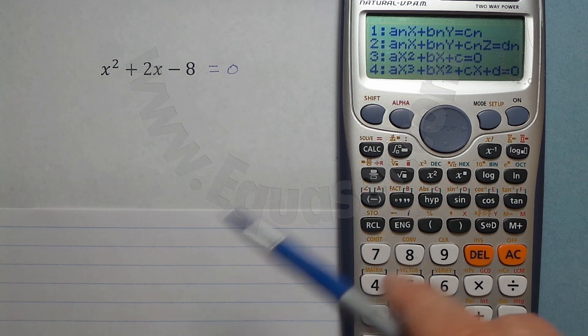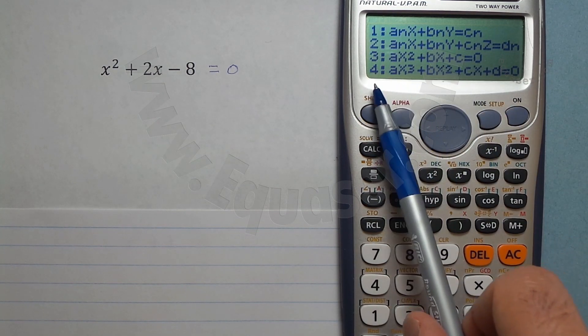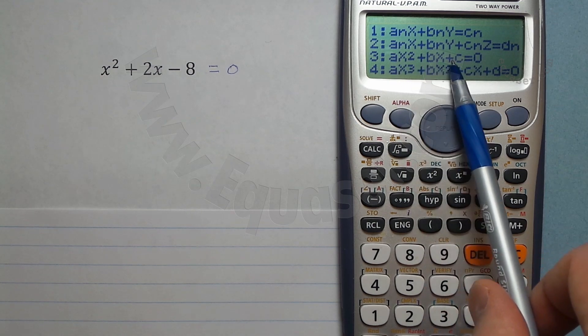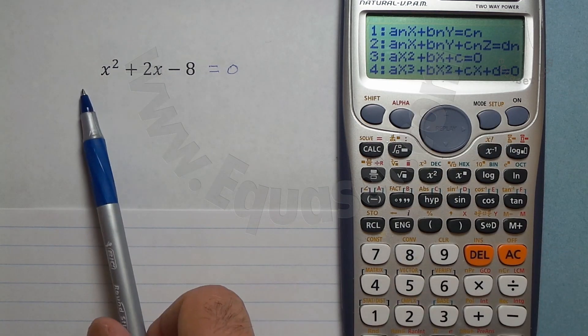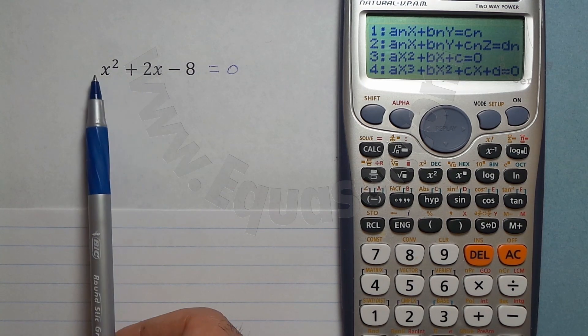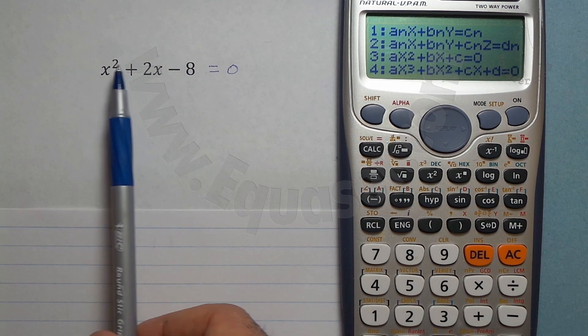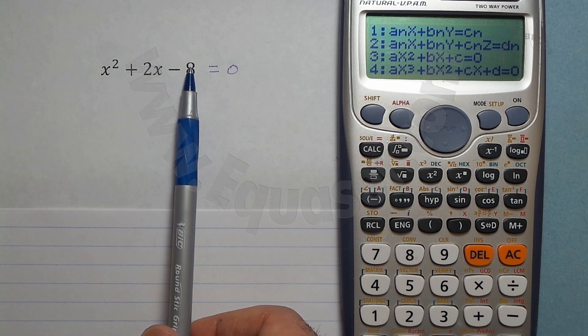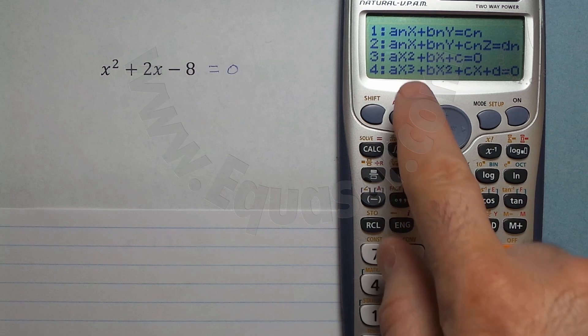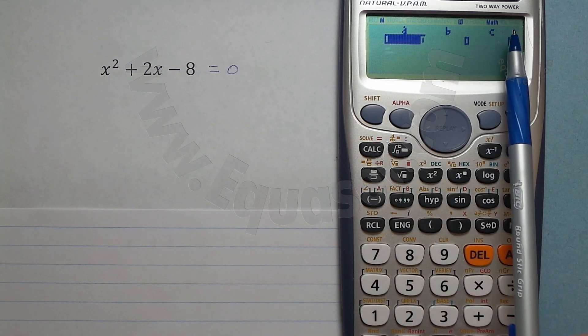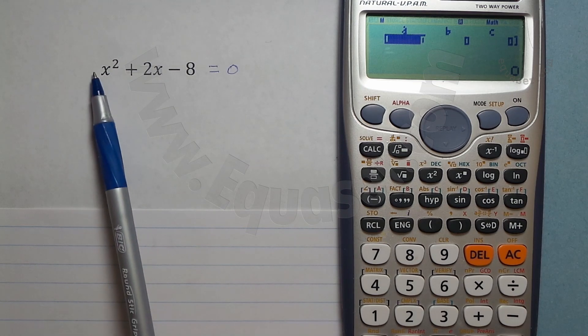To do that, we press the mode button and then for equation we press 5. Here are the options. This number 3 is ax squared plus bx plus c equals 0, which is this equation. The coefficient of x squared is a, the coefficient of this x is b, and this constant is c.